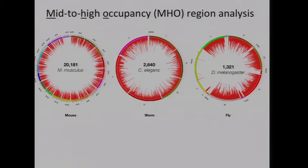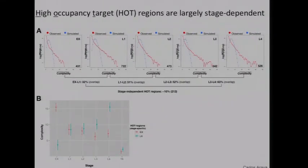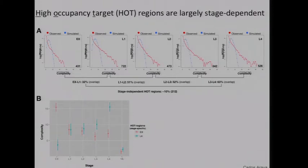First, we analyzed all of these data sets and found these hot regions, which Mark told you about — there are thousands of them in the various organisms, identifiable by statistical over-representation of regions. They do change across development. For example, only 212 of the hot regions in worms are similar between the various stages — embryo, first larval, second, third, fourth. Most are stage-specific: embryonic ones are very specific to embryos and are largely lost when you move to L1, and similarly you get a lot of stage-specific hot regions when moving from L3 to L4.